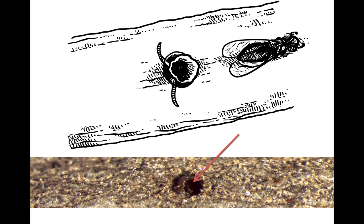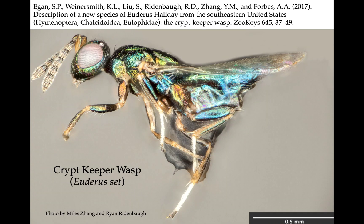We named the wasp the crypt keeper wasp, and she's totally hip. In addition to being beautifully iridescent, she has these super cute little boots — but I digress.